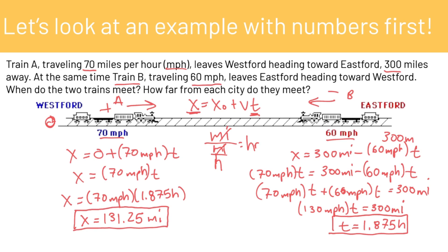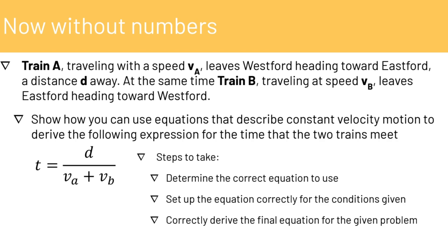That's how you solve the problem with numbers. Now let's look at how to solve it without numbers. Train A travels with speed V_A leaving Westford toward Eastford, a distance D away. At the same time, train B traveling with speed V_B leaves Eastford heading toward Westford. We need to derive the expression for time when the two trains meet: T equals D divided by V_A plus V_B.